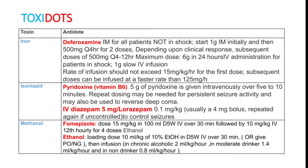Next is INH or isoniazid, a common anti-tubercular drug. For toxicity, give vitamin B6 — that is pyridoxine — 5 grams IV over 5 to 10 minutes. Patients having seizures can be treated with IV diazepam 5 mg or lorazepam 0.1 mg per kg.